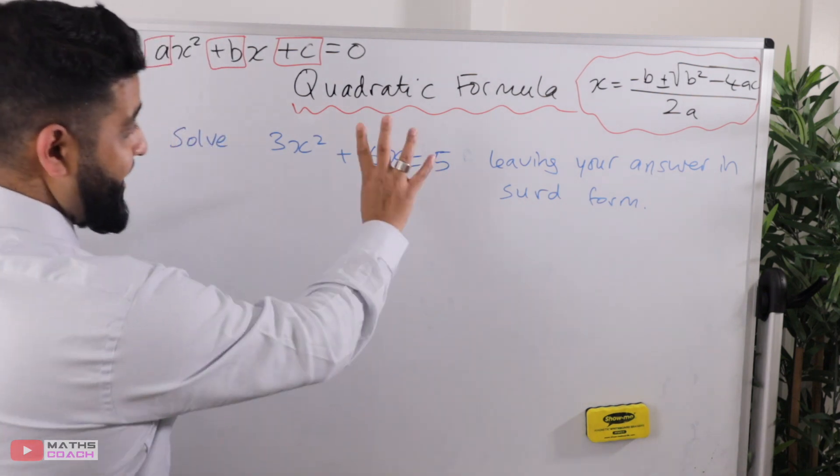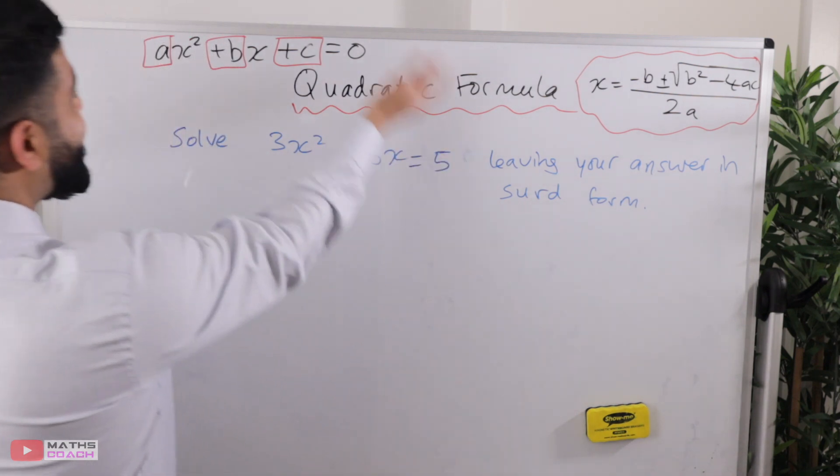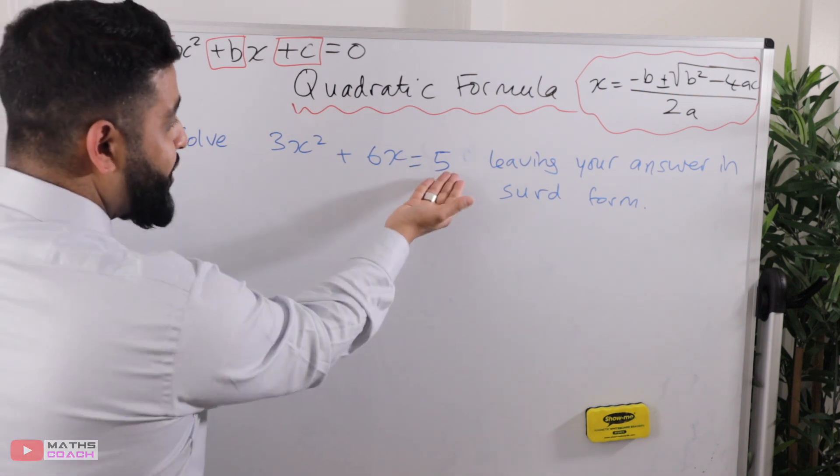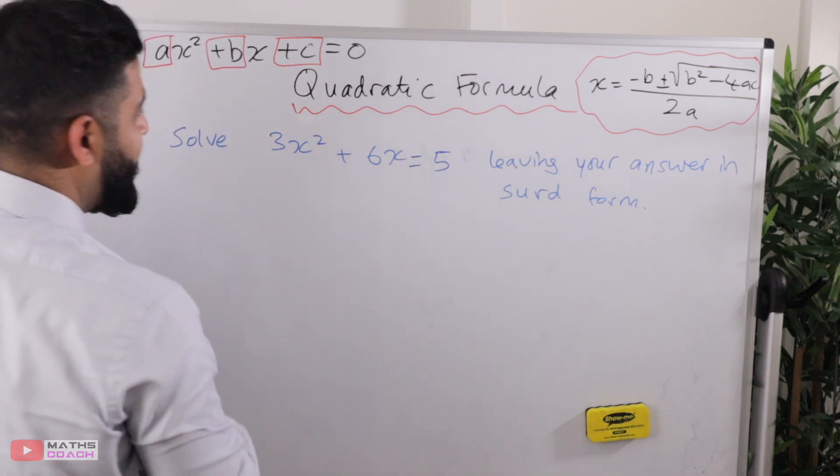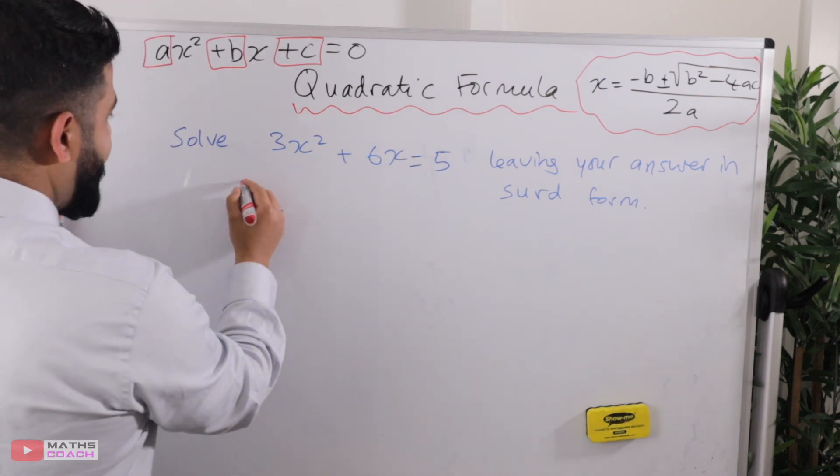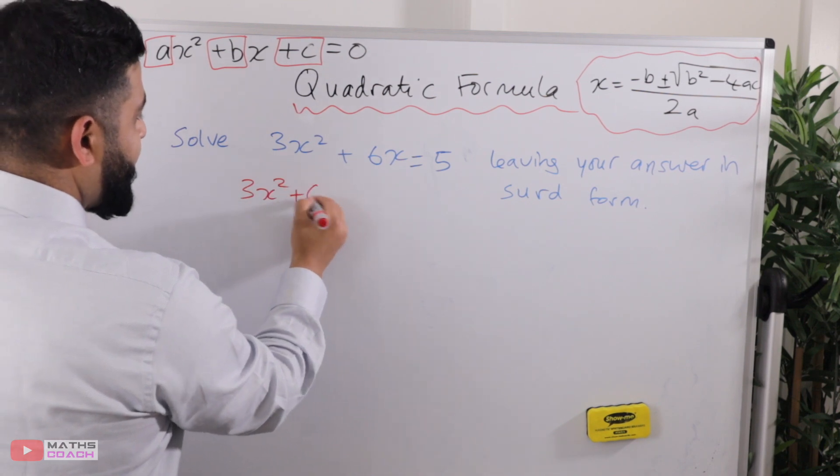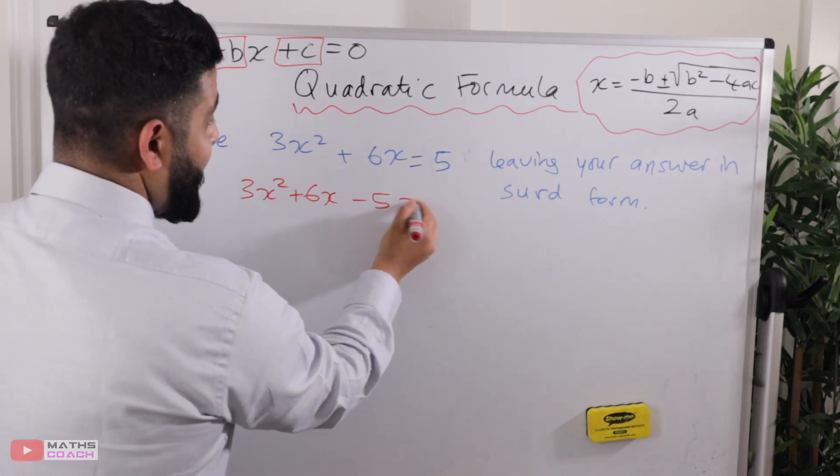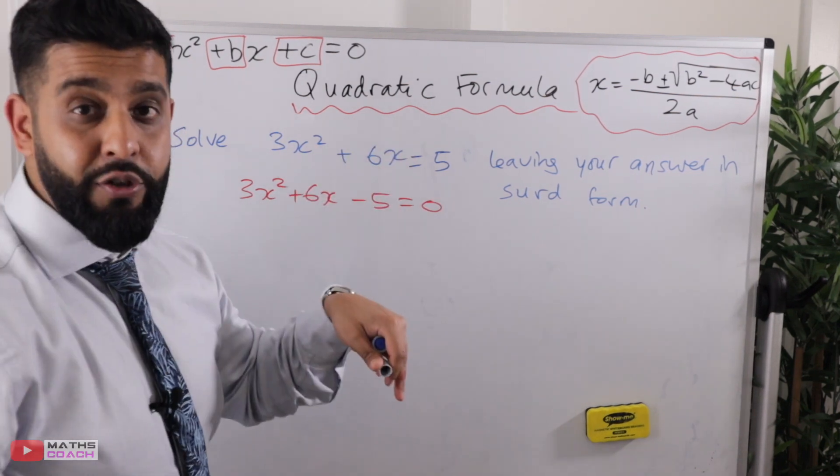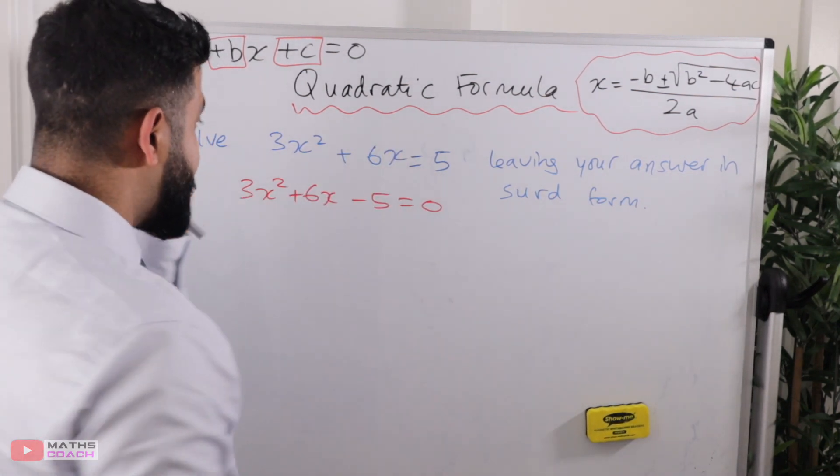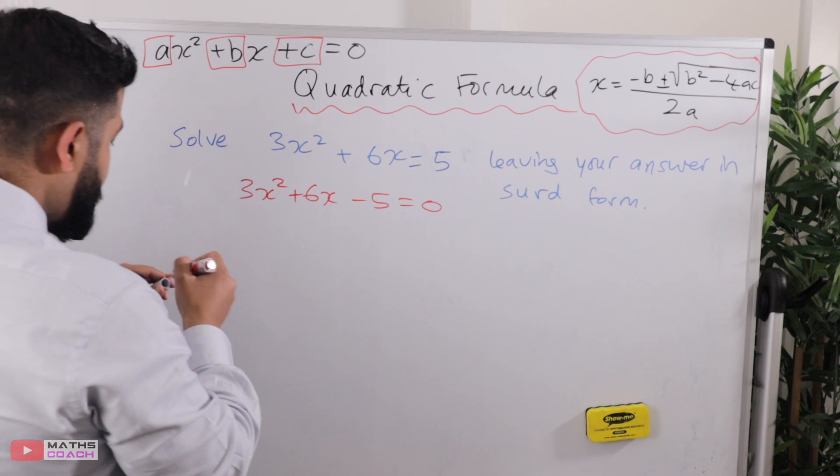The first thing you should have done is dealt with this 5 by putting it into the quadratic format, which is to simply move this 5 over to this side, and that will give us 3x squared plus 6x minus 5 equals 0. When you move something over to the other side, you change the sign, so it's a minus 5.